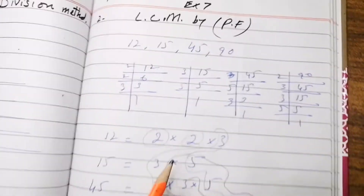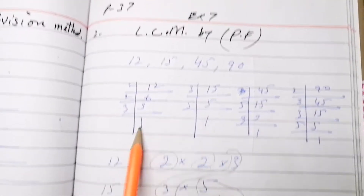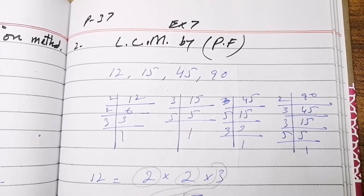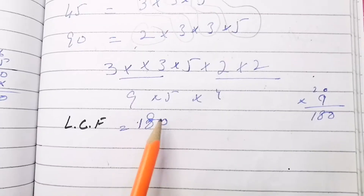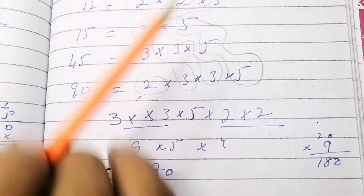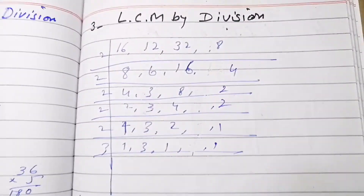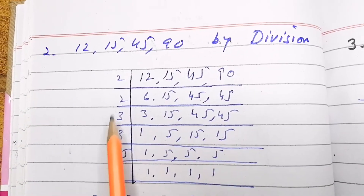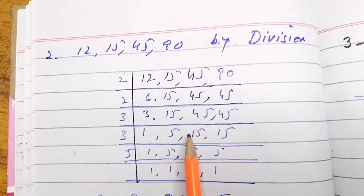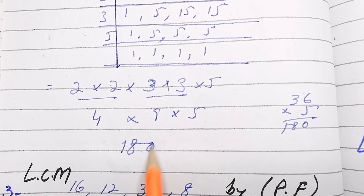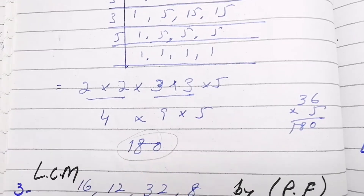For question number 2, LCM by prime factorization method: take separate factors, take common factors and non-common factors and multiply them. The answer is 180. Now we solve the same question by division method: take the factors, divide them, and multiply the results. The answer is again 180.